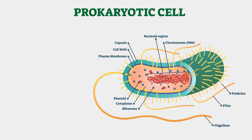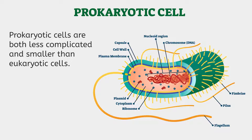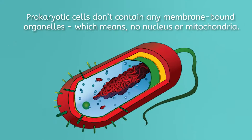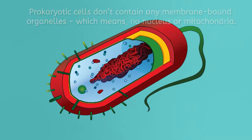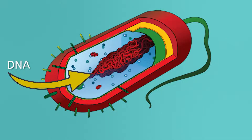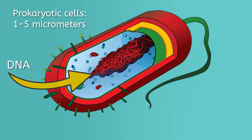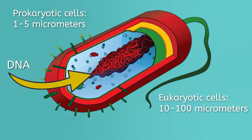Let's transition from eukaryotic to prokaryotic cells. Prokaryotic cells are both less complicated and smaller than eukaryotic cells. Prokaryotic cells don't contain any membrane-bound organelles, which means no nucleus or mitochondria. Without a nucleus, prokaryotic DNA is circular and floats freely in the cytoplasm of the cell. Prokaryotic cells are usually around 1 to 5 micrometers long, while eukaryotic cells range from around 10 to 100 micrometers long.